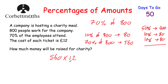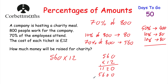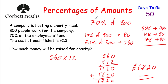560 multiplied by 12: working through the long multiplication, 2 times 560 gives 1,120, and 10 times 560 gives 5,600. Adding those: 1,120 plus 5,600 equals 6,720. So £6,720 would be raised for charity.